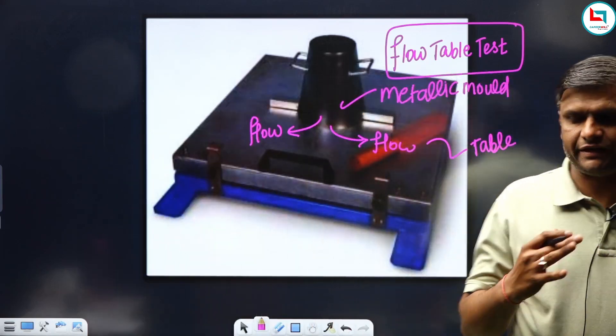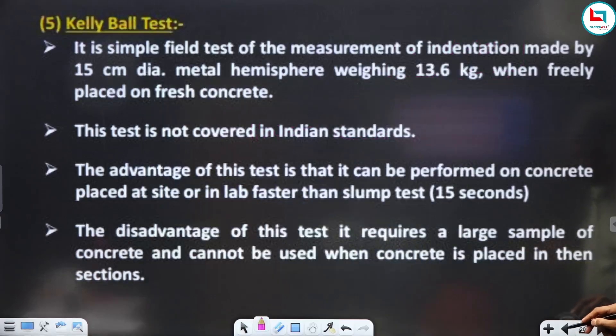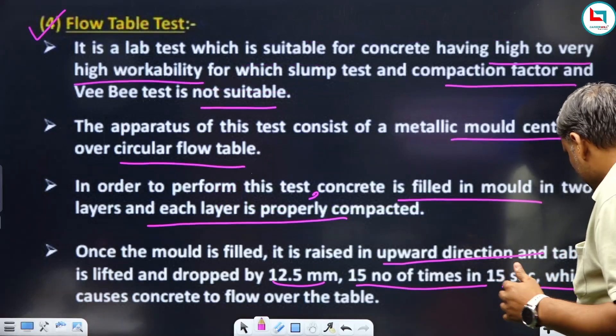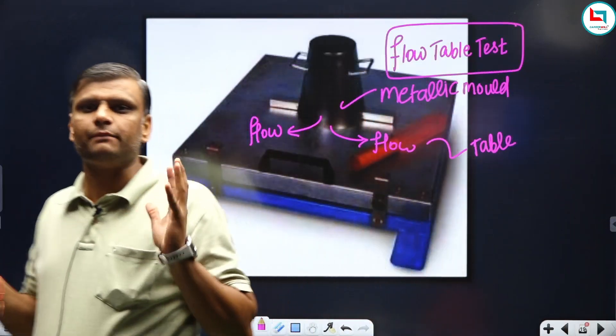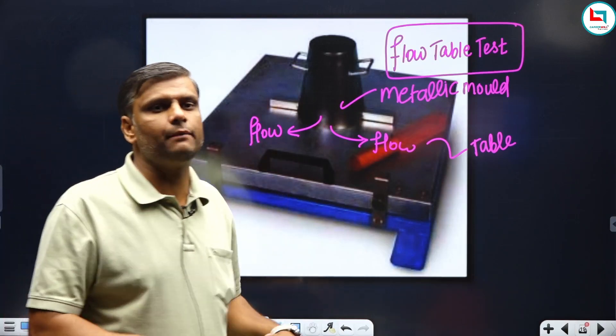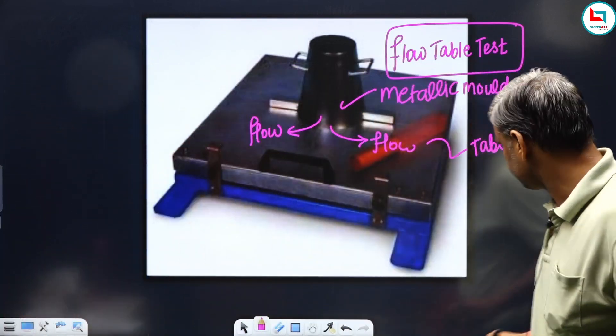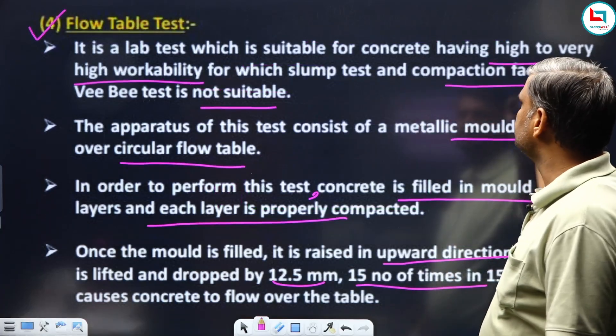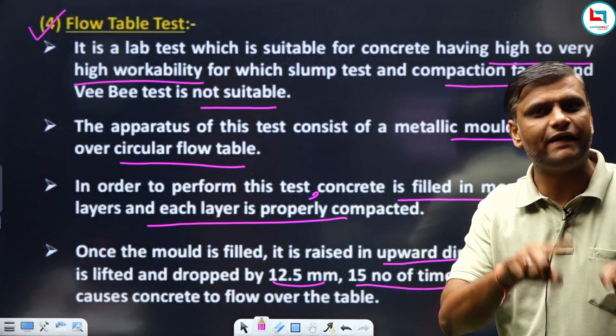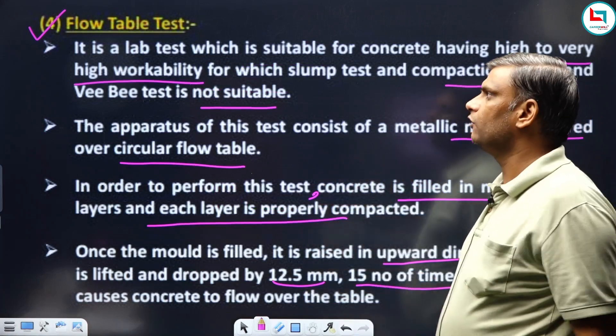That is our flow table test, in which basically our compaction test, VB consistometer test, or slump test. Our flow table test is basically used for high to very high level of workability.